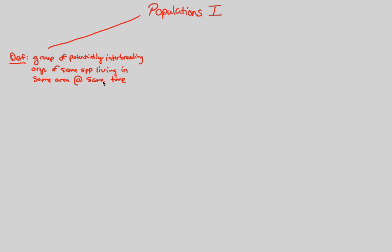So let's go over. A population is defined as a group of potentially interbreeding, meaning that they can have offspring with each other, organisms of the same species, living in the same area at the same time. This is an important definition that we're going to work off of.